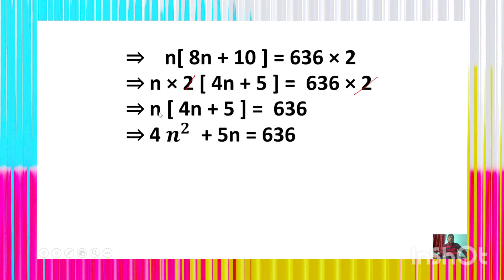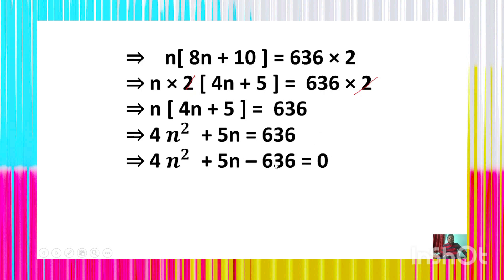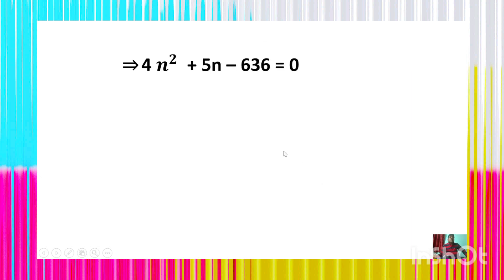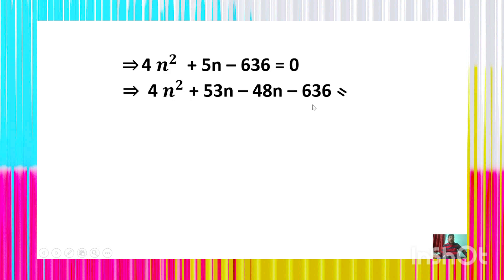Expanding: 4n² + 5n = 636, so 4n² + 5n − 636 = 0. This is a quadratic equation in n. Solving by middle-term splitting: 4n² + 53n − 48n − 636 = 0.